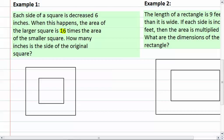In example one here, we have each side of a square is decreased by six inches. And when this happens, the area of the larger square is sixteen times the area of the smaller square. How many inches is the side of the original square?